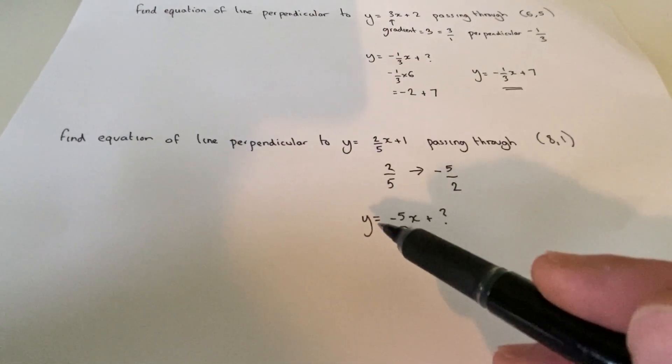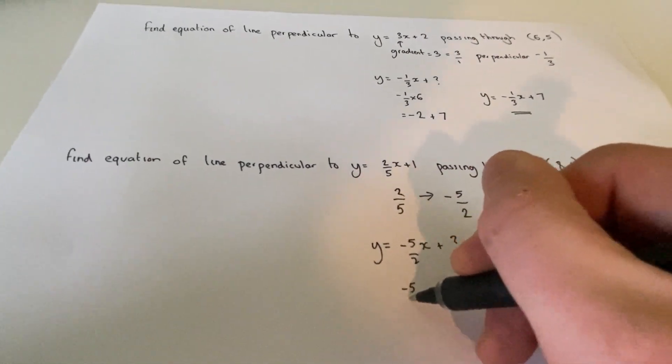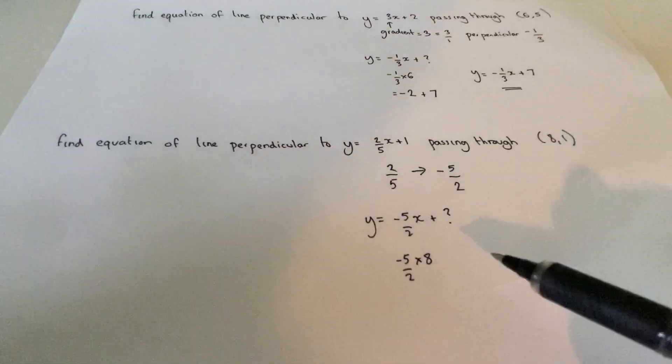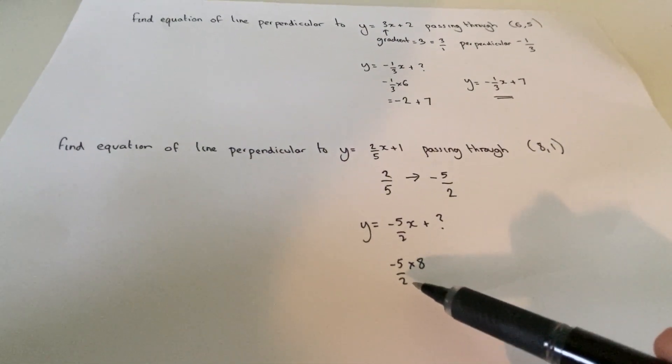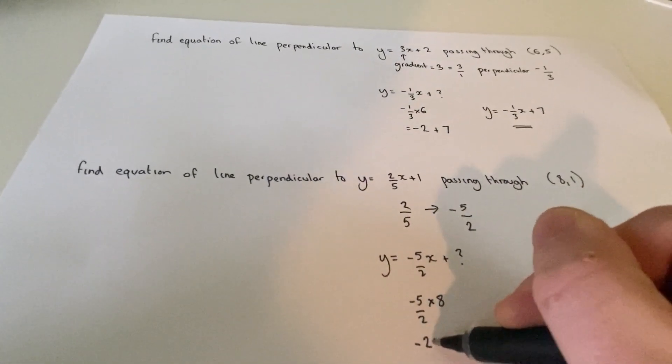...the answer or the y-coordinate needs to equal 1. So minus 5 over 2 times by 8. Now to work this out, I do 8 divided by 2 is 4 times by 5 is 20. So this is negative 20.